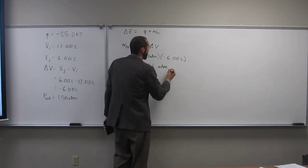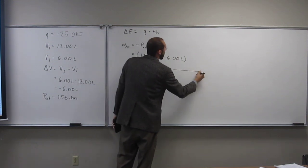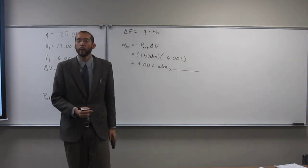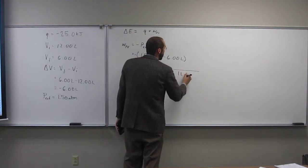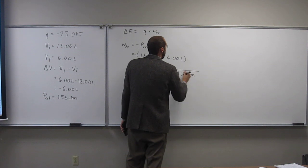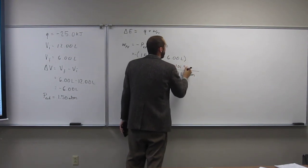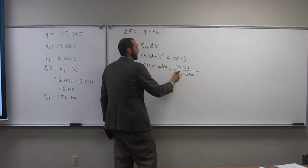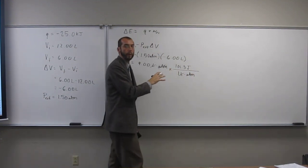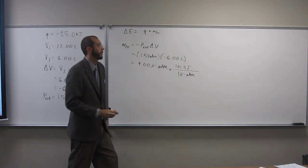So they give us the conversion. This is the conversion that you won't have to remember. Okay? So one liter atm equals 101.3 joules. So liters cancel, atms cancel. But we want to get it into kilojoules. So let's just do that right now.